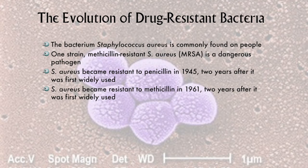In the early 1940s, in blitz-ravaged England, penicillin became the first antibiotic used to treat bacterial disease in humans. It was amazingly effective — an almost miraculous cure. However, it was only a matter of a few years before the first penicillin-resistant strains of Staphylococcus aureus started to appear in patients. Staphylococcus is better known by its short name, Staph, as in staph infections.